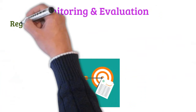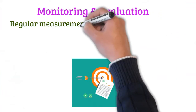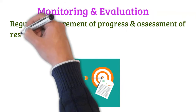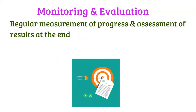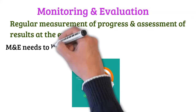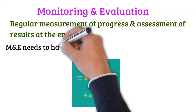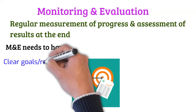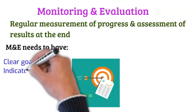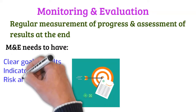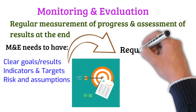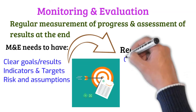Monitoring and evaluation are two different but interconnected processes that allow organizations to regularly measure progress and assess the success of projects and programs at the end. Monitoring and evaluation involves setting up clear goals, establishing indicators and targets, collecting and managing data, analyzing and reporting the findings, and finally using the feedback to improve outcomes.